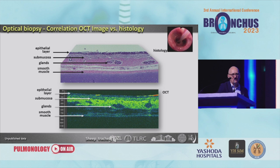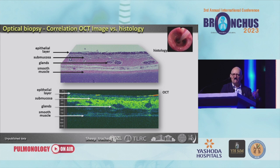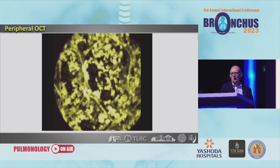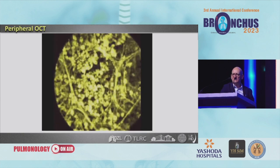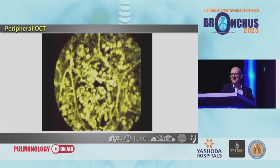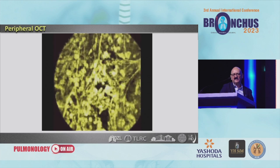We have OCT — optical coherence tomography — used in the central airways. There is a lot of research ongoing to use that for better understanding which patient is maybe a candidate for a tumor plus T, an asthma therapy. But we are also now having slimmer probes, and with the slimmer OCT probes you can move the probes forward into the alveolar space.